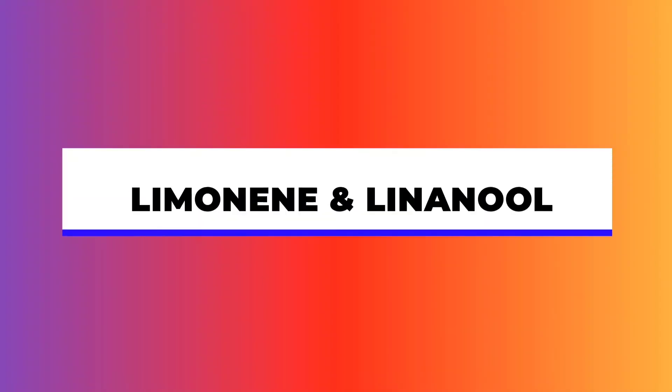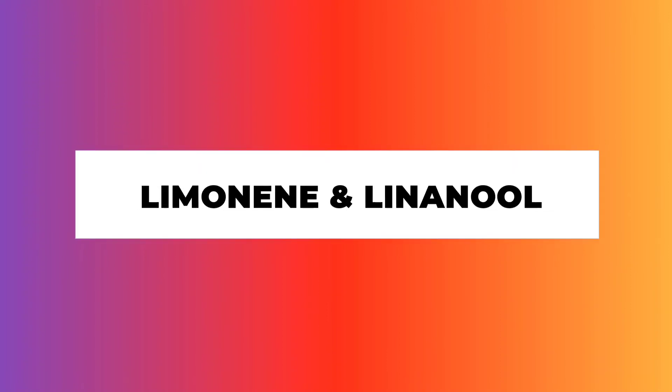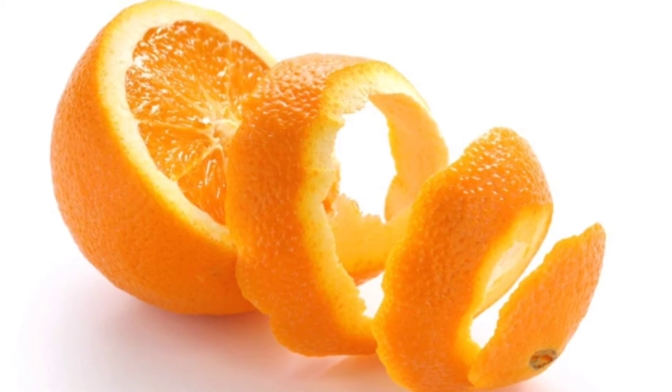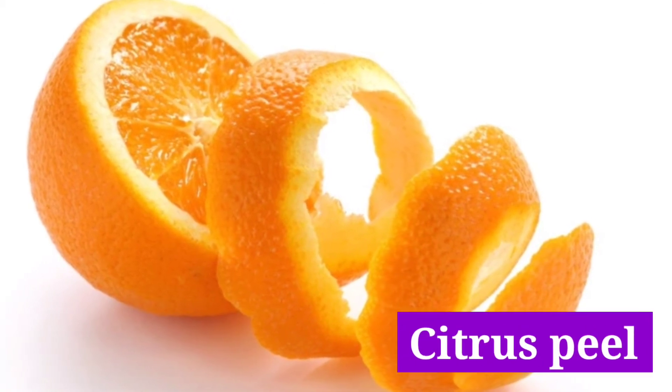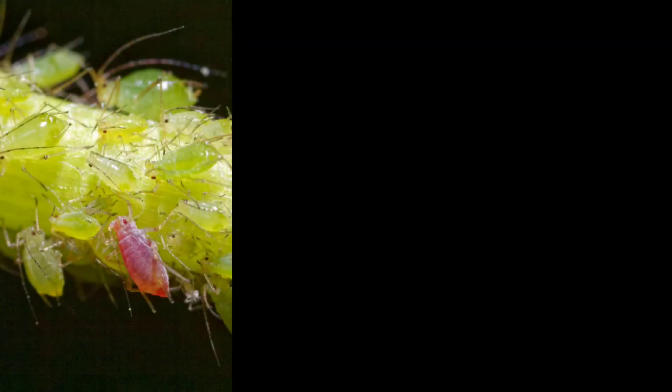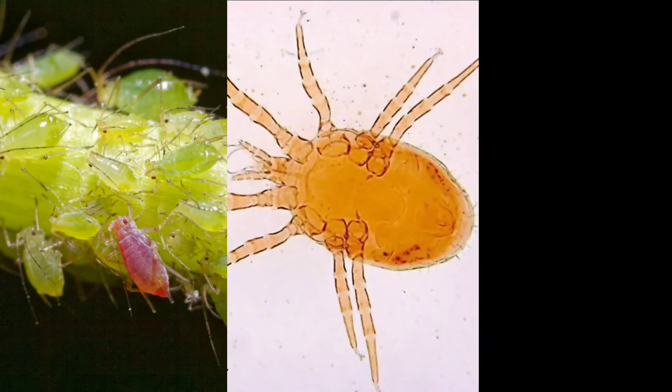Now we will talk about Limonene and Linalool. Limonene and Linalool are actually extracted from citrus peel. These two compounds evaporate quickly in the environment. They are used to control aphids, mites, and fleas. They work by paralyzing the insects.